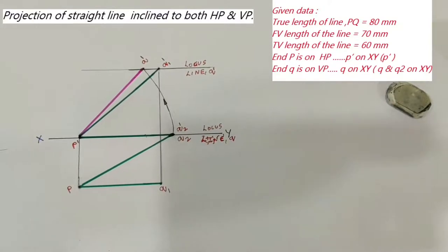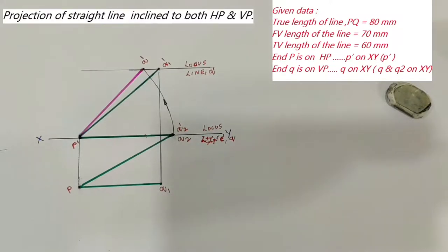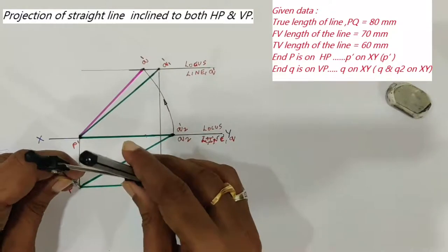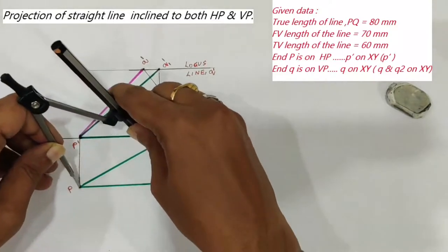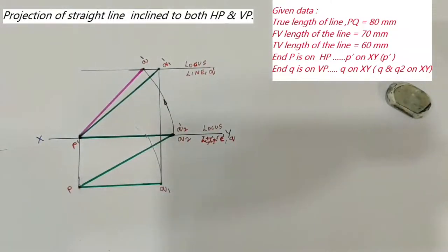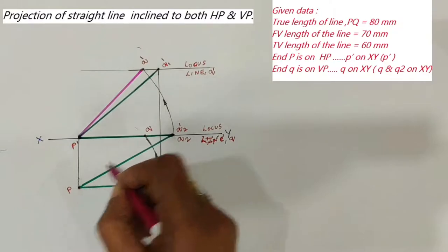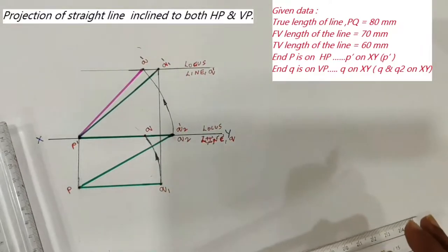Now draw the final projection of the line in the top view. There are two ways of doing it. One is to draw a line parallel to the P–P' line passing through Q', which cuts the reference line at Q. Or, with P as a center and P–Q1 as a radius, draw an arc towards the locus line. Name this point Q. Join P and Q — this is the final projection of the line in the top view, drawn as dark as the final front view projection.